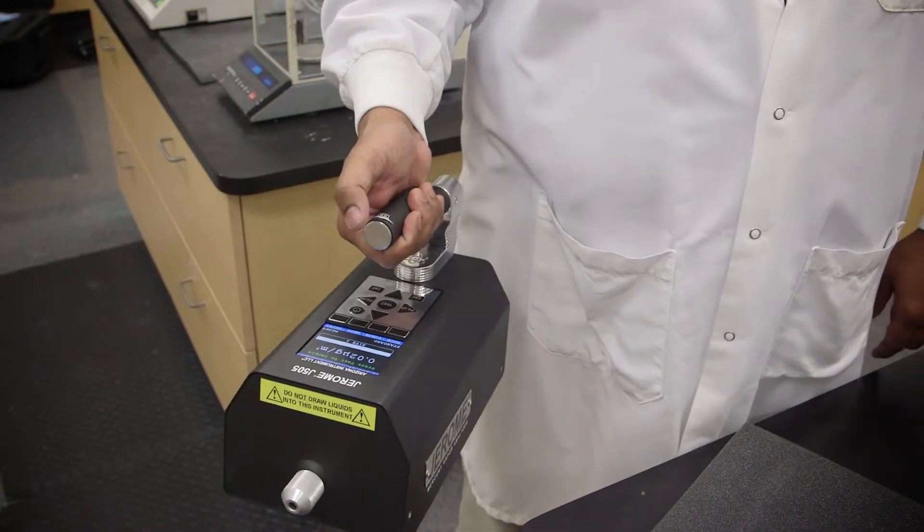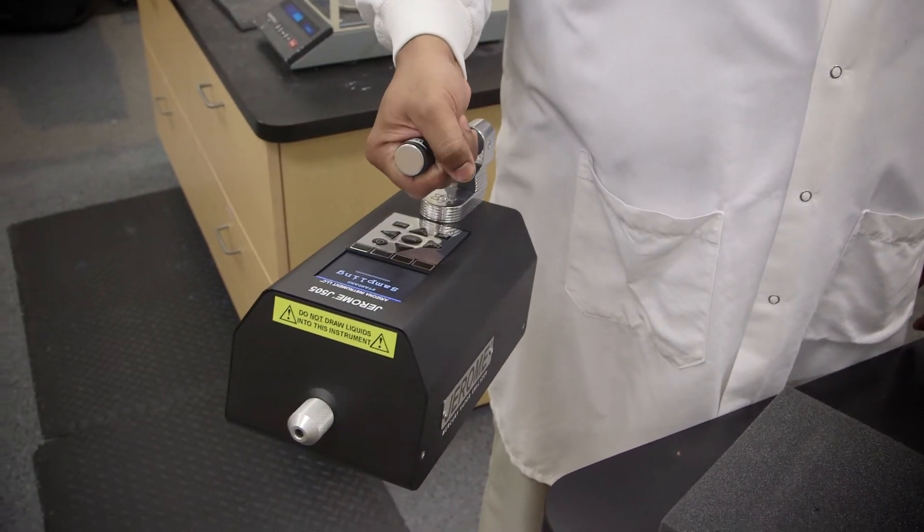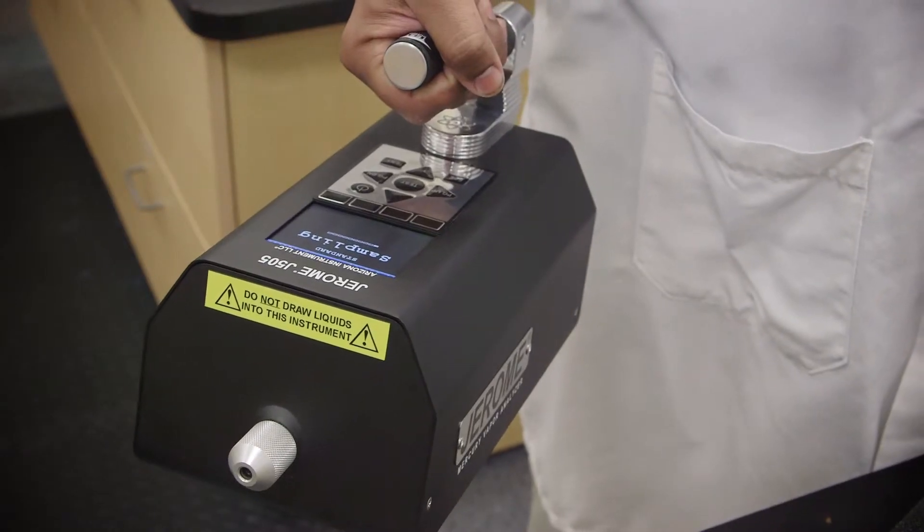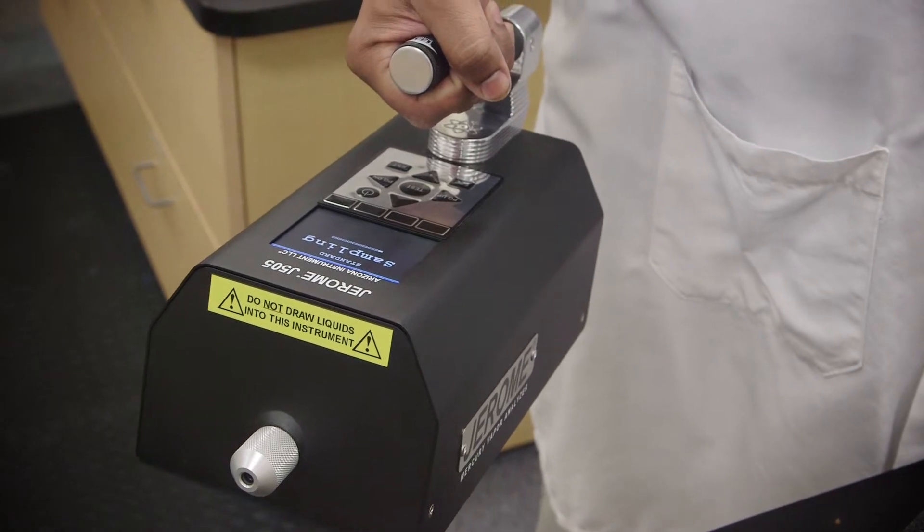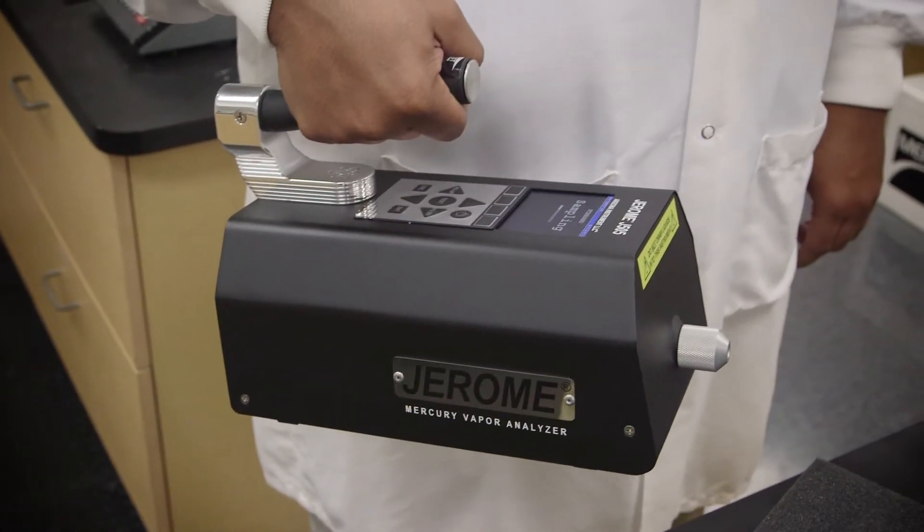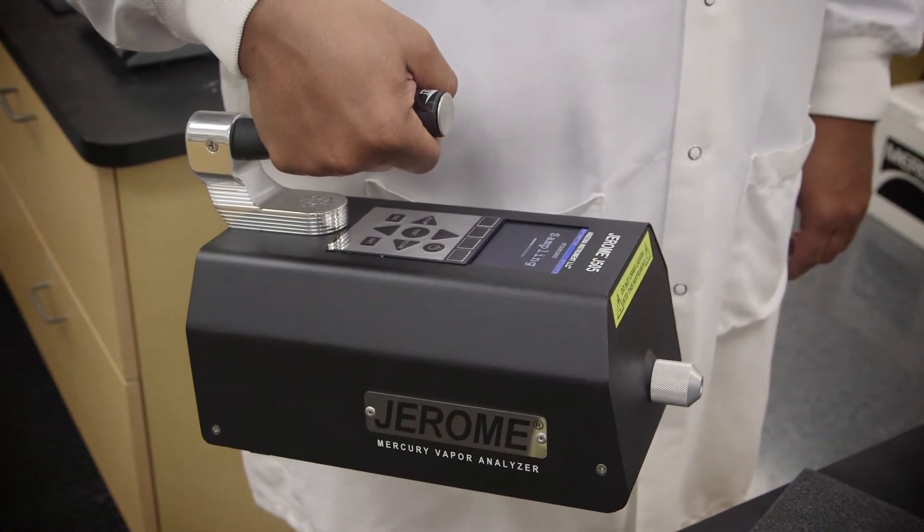The highly efficient optical cell requires less flow to purge the system. This allows the J505 to run at a lower flow rate, minimizing sample dilution seen in competing spectroscopy instruments.